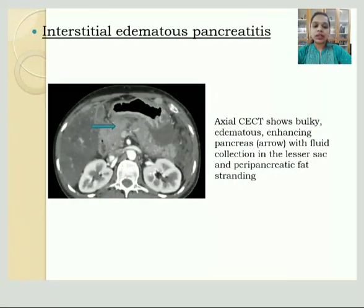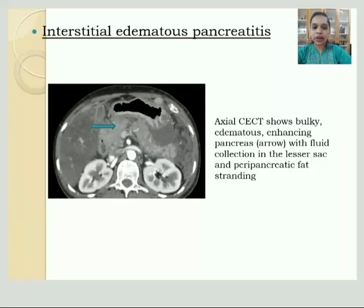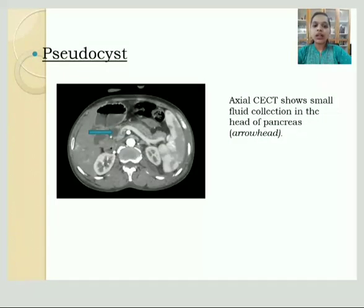Next is an axial CECT image showing a bulky edematous enhancing pancreas, indicated by an arrow, with fluid collection in the lesser sac and peripancreatic fat stranding. And next is an axial CECT image showing a small fluid collection in the head of the pancreas, indicated by an arrow, consistent with a pseudocyst.